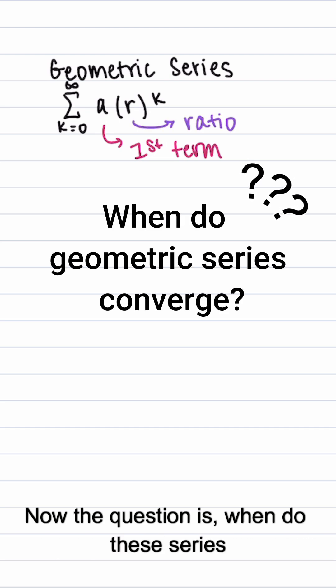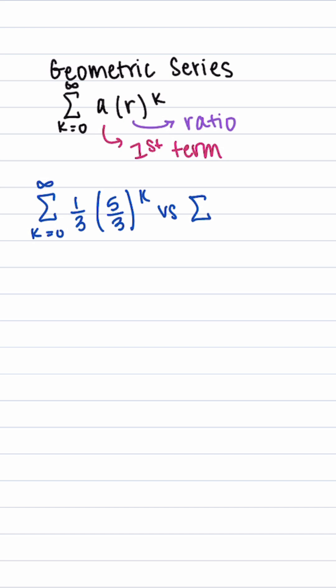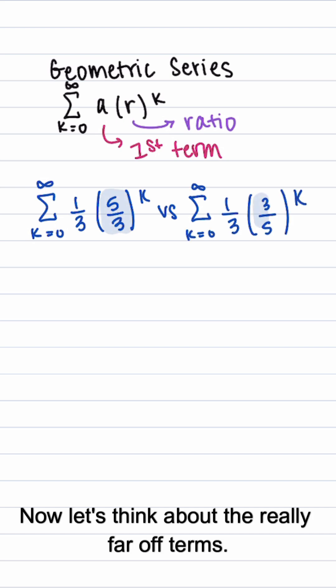Now the question is, when do these series converge? Well, let's take a look at two examples. Here we have the summation of 1 third times 5 thirds to the power of k compared to 1 third times 3 fifths to the power of k. Now let's think about the really far off terms.